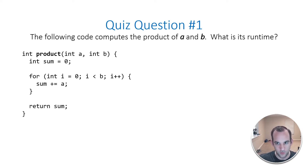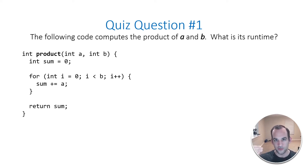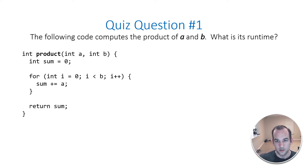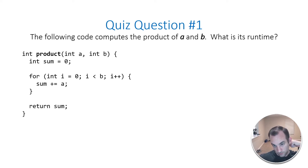So with question number one, the following code computes the product of A and B — what is the runtime? So I'm not going to actually go through the meaning of the code for each of these. We're just going to go over the answer. This is a piece of code computing the product of two inputs, A and B. There's essentially just a for loop here that we really care about.